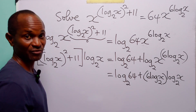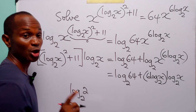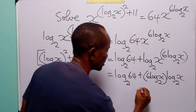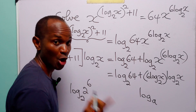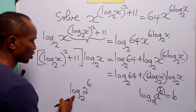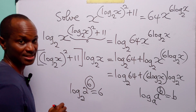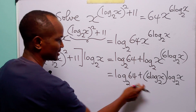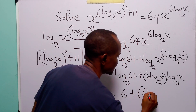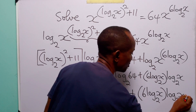Now let us look at log to base 2 of 64. You know that 64 is 2 to the power 6, and when we have log to base 2 of a to the power b, that is simply equal to b. So log to base 2 of 2 to the power 6 is equal to 6. That simply means that this right-hand side is equal to 6 plus 6 times log to base 2 of x, multiplied by log to base 2 of x.